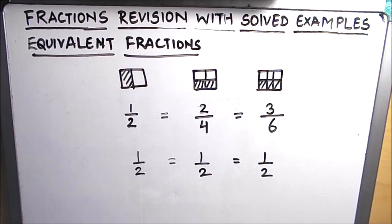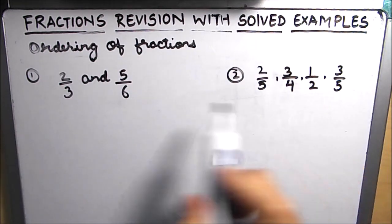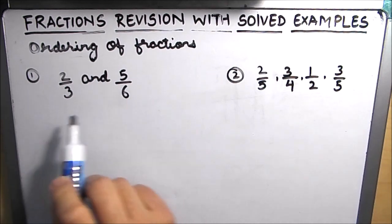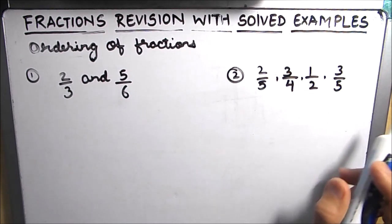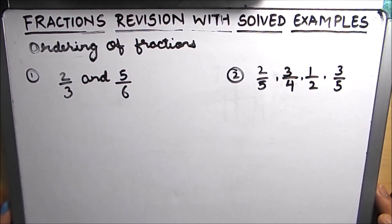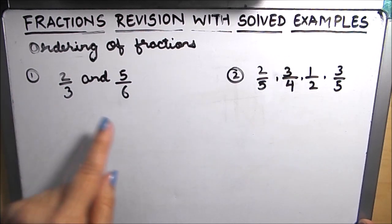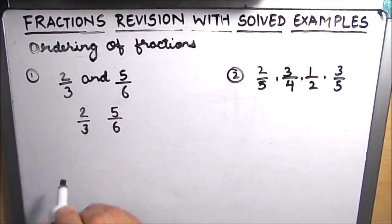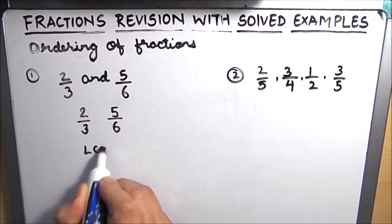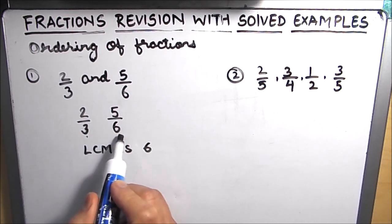Next is ordering or comparison of fractions. Here I have taken two examples: the first is comparing two fractions to tell which one is bigger, and the other is arranging fractions in increasing order. The easiest way to compare fractions is to make them equivalent fractions by making the denominators equal using the LCM of the two denominators. We have 2 over 3 and 5 over 6 as the two fractions, and the LCM of 3 and 6 is 6.